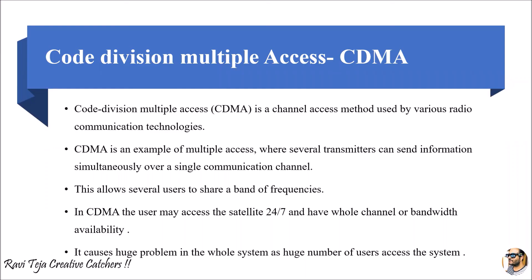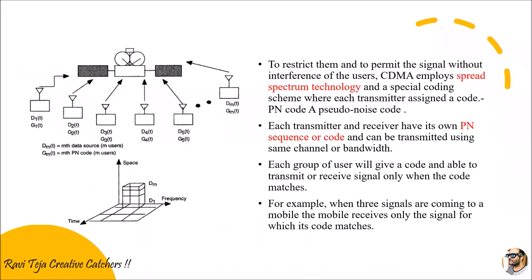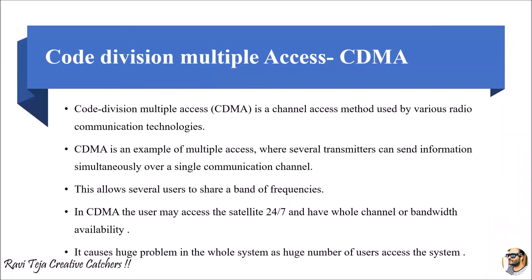Even though 24/7 access with full bandwidth is a benefit, when there are more users there will be huge interference problems — also considered as crosstalk. To avoid this interference, CDMA uses spread spectrum technology, which spreads the signal widely to all users but with one condition: each and every signal carries a pseudo noise code, and only when this code matches the receiving end will the communication be successful. This is the basic concept of CDMA, illustrated here with a mobile communication system example.